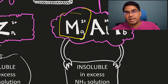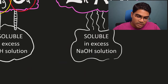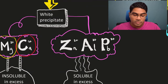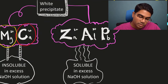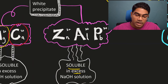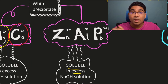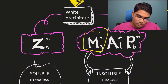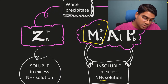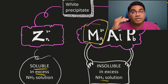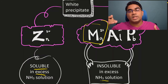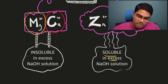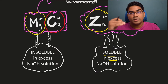So now we have differentiated calcium and magnesium. Now let's look at zinc. Zinc is a special case. When you add a few drops of sodium hydroxide solution, you get a white precipitate which is soluble in excess — so it can be zinc, aluminium or lead. However, when you add a few drops of ammonia solution, you will still get a white precipitate that is soluble in excess. Zinc is the only one that is soluble in excess in both sodium hydroxide solution and ammonia solution.